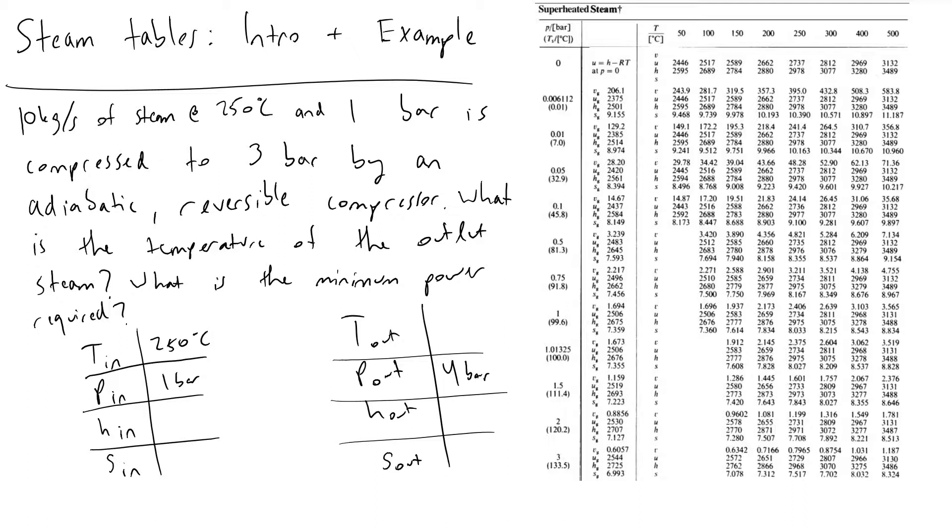So what we're going to start with is the given information that we have. What we see is that we've got steam coming in at 250 degrees C and one bar, and we want to compress this to three bars—I should correct this in my table—and we are going to be performing this on 10 kilograms per second of steam.